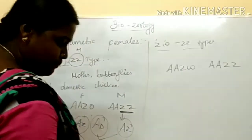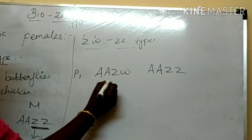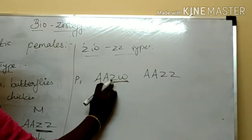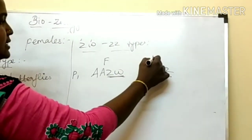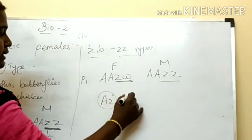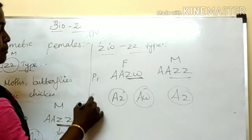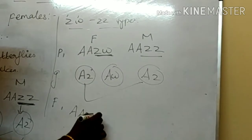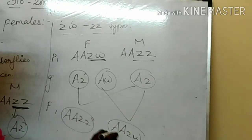For the ZW type, the parent female is heterogametic and has two gametes. The male is homogametic. The gametes are Z and W from the female. The F1 generation produces ZZ type (male) and ZW type (female).